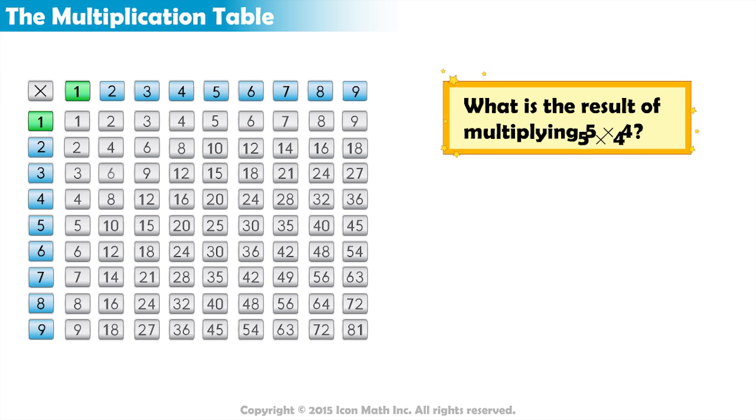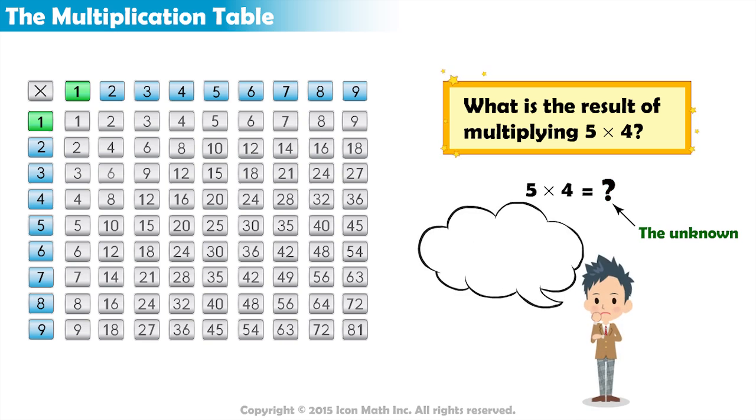We can write the problem as 5 times 4 equals some value that we don't know yet. So we put a question mark after the equal sign to represent the unknown value. To find the unknown, we need to know which row and column to look for.